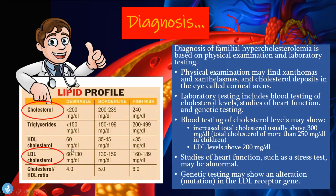LDL cholesterol levels of 60 to 130 milligrams per deciliter is a desirable amount, 130 to 159 mg/dL is borderline risk for atherosclerosis, and 160 to 189 mg/dL is high risk for heart disease. Studies of heart function such as a stress test may also be abnormal in these patients. Genetic testing may show alterations or mutations in the LDL receptor genes.